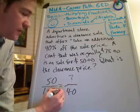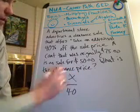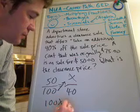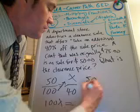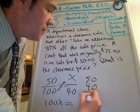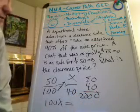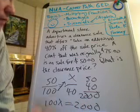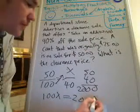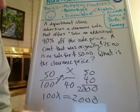Cross-multiplying gives us 100X equals 40 times 50. Let's do the math: 4 times 0 is 0, 4 times 5 is 20, so 40 times 50 equals 2000. That looks like a big number. Fermi and I talked about a couple of ways to look at this — including just lopping off zeros — but let's do the algebra first.